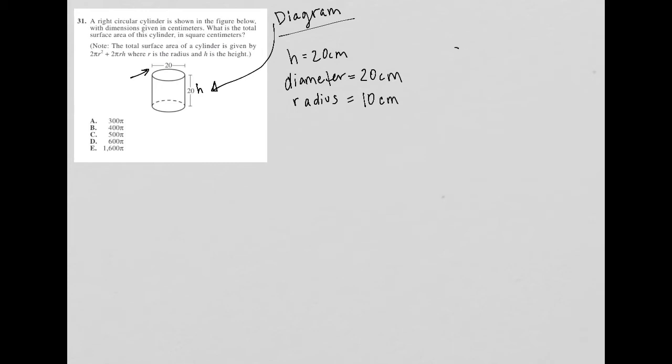We're being asked to find the surface area, which I'll label as SA. Anytime I see a note, I make sure to read it. The total surface area of a cylinder is given by 2πr² + 2πrh, where r is the radius, which we already wrote down, and h is the height, which we already know.